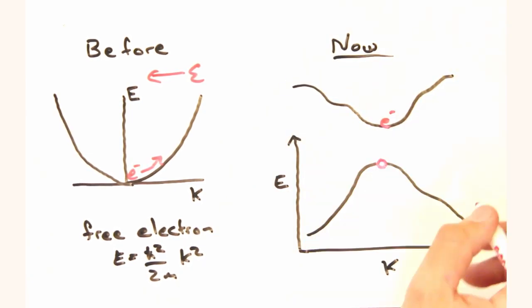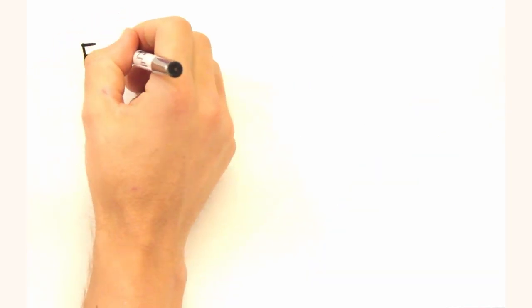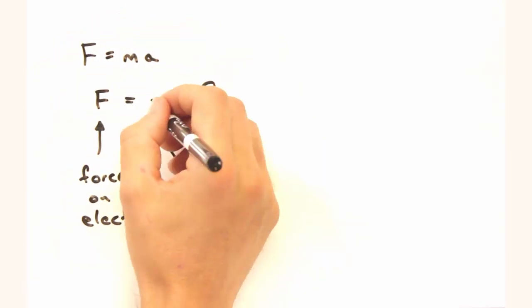However, the electron dispersion in a semiconductor is pretty different than the free electron dispersion. Let's build up f equals ma for a semiconductor.